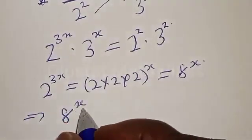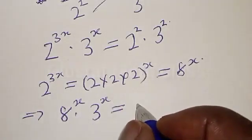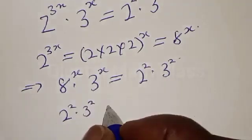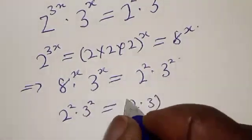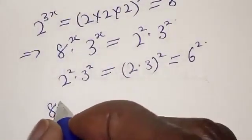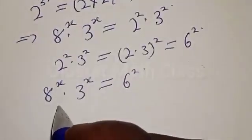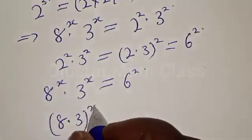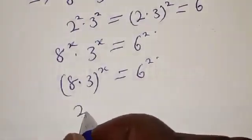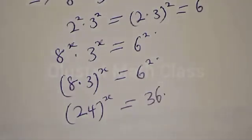So we have 8 raised to power x, multiplied by 3 raised to power x, equal to 2 squared multiplied by 3 squared. Now 2 squared multiplied by 3 squared can also be expressed as (2 times 3) squared, which equals 6 squared. Therefore our equation becomes: 8 raised to power x multiplied by 3 raised to power x, equal to 36. The left hand side becomes (8 multiplied by 3) raised to power x, which is 24 raised to power x, equal to 36.